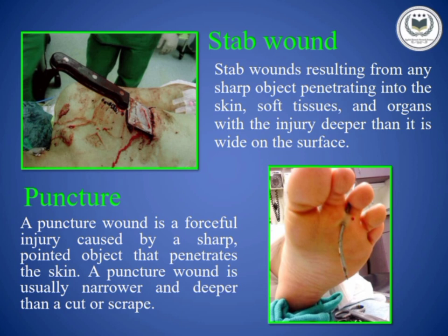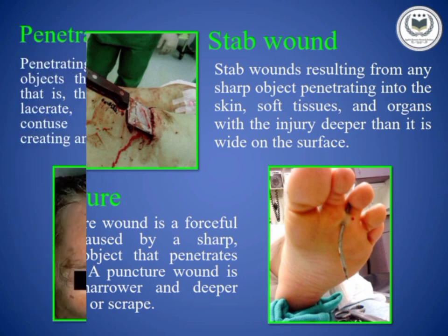A puncture wound can occur due to a bite or stepping on a rusty piece of metal such as a nail. Such wounds can cause external and internal bleeding. They are very painful and may lead to additional symptoms like swelling, drainage of pus, warmth, and redness in the skin.